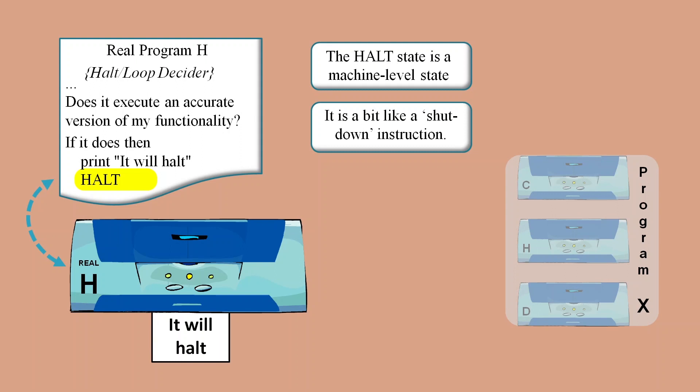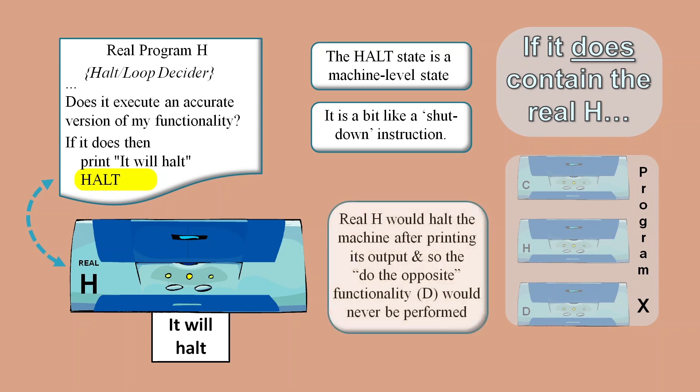Let's first consider the scenario where it does contain machine level halting. Then within Program X, after functionality H has produced its output, it will do a machine level halt that will force Program X to stop. So it will never reach functionality D that tries to do the opposite of what H says, which means it will not be able to contradict the output of functionality H.